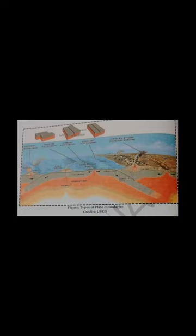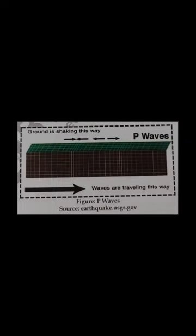Body waves: these are generated due to the release of energy at the focus and move in all directions, traveling inside the body of the earth. Types of body waves — P waves: also called primary waves. P waves are faster among seismic waves and are the first to arrive at the surface. They are similar to sound waves. They can travel through gaseous, liquid, and solid materials. A P wave (compressional wave) vibrates parallel to the direction in which the wave is traveling, exerting pressure on the material in the direction of propagation. Hence, it creates density differences in the material, leading to stretching and squeezing of the material.